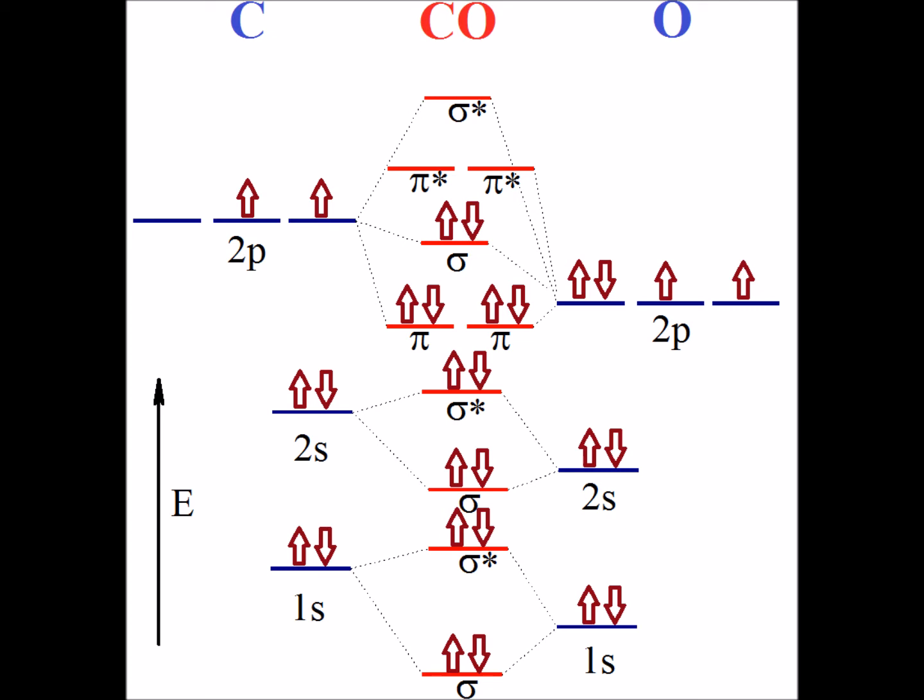Note that we have a total of 10 electrons in bonding orbitals, 4 electrons in antibonding orbitals. 10 minus 4 equals 6, one half of that is 3, so we have a bond order of 3, a triple bond for carbon monoxide.